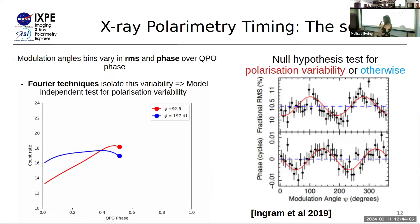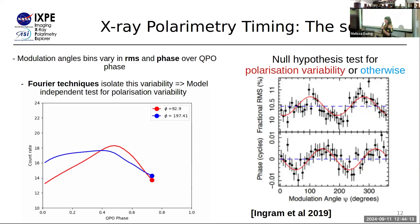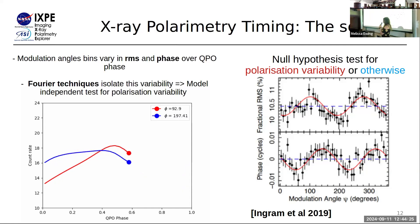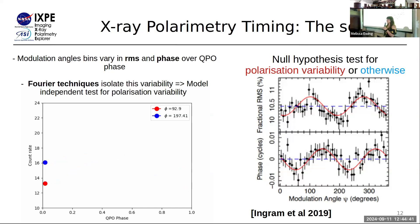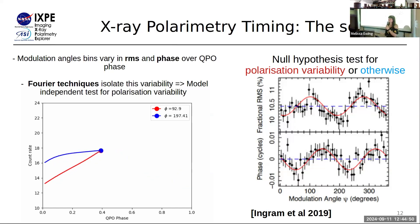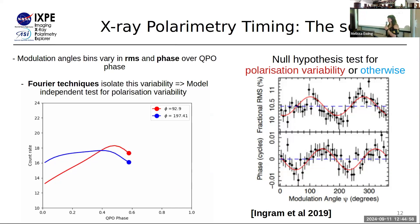It's this variability that we use to detect polarization variability. Crucially, this method is completely model-independent — whether the variability is periodic, aperiodic, or quasi-periodic, there will always be a change in RMS and phase with modulation angle. The technique uses a Fourier method: if you're familiar with spectral timing analysis, the RMS and phase plots are similar, but instead of choosing energy bins we choose modulation angle bins. This gives us a null hypothesis test: if there is polarization variability, we see a sinusoidal dependence of RMS and phase over modulation angle; otherwise we get a flat response.